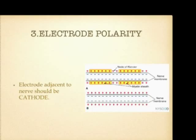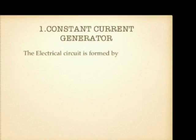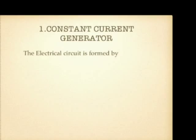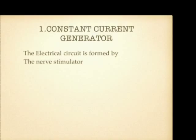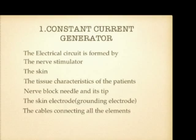For an ideal nerve stimulator, there should be a constant current generator. If you set one milliamp of current, the nerve should be stimulated at exactly one milliamp. The current delivered is influenced not only by the nerve stimulator but also by the patient's skin, tissue characteristics, the nerve block needle tip, the ground electrode, and the cables connecting all elements — all of which contribute to variable impedance. A constant current generator compensates for this wide variability of impedance, ensuring accurate current delivery and reducing the risk of nerve injury.